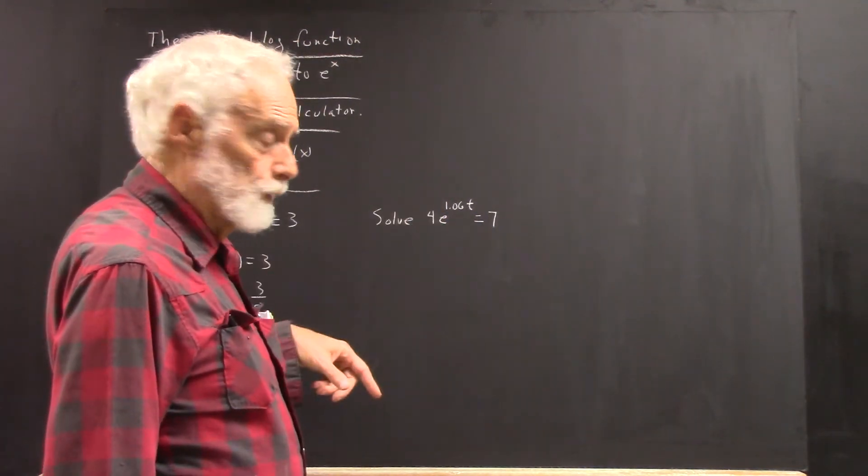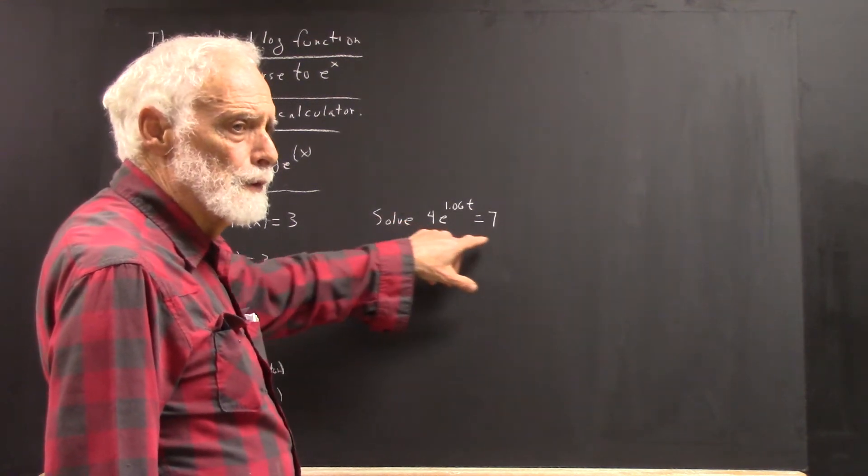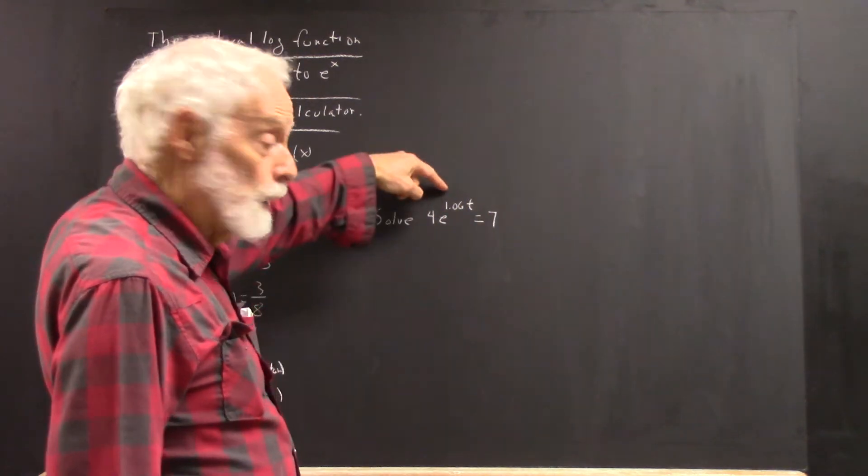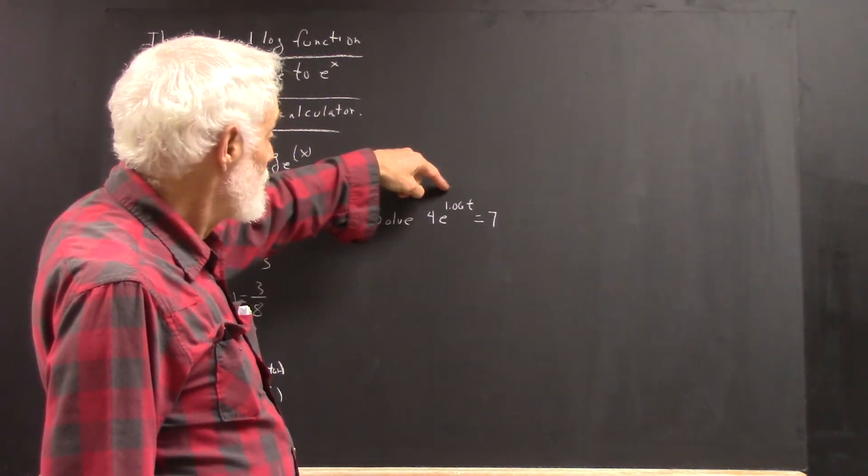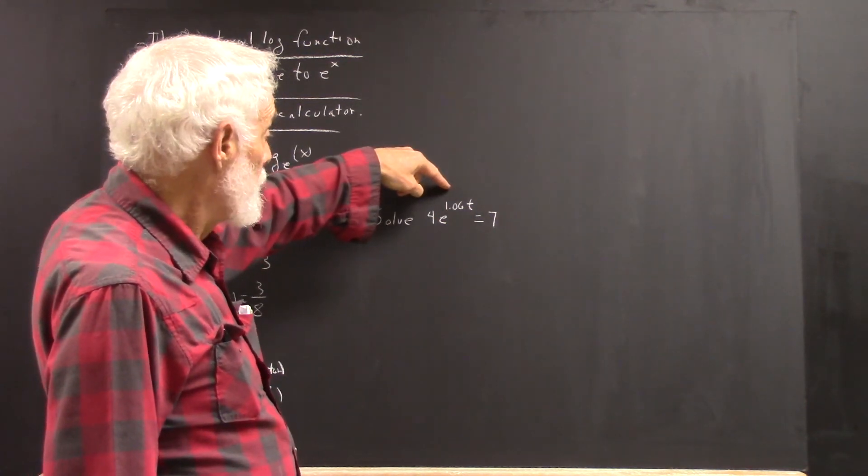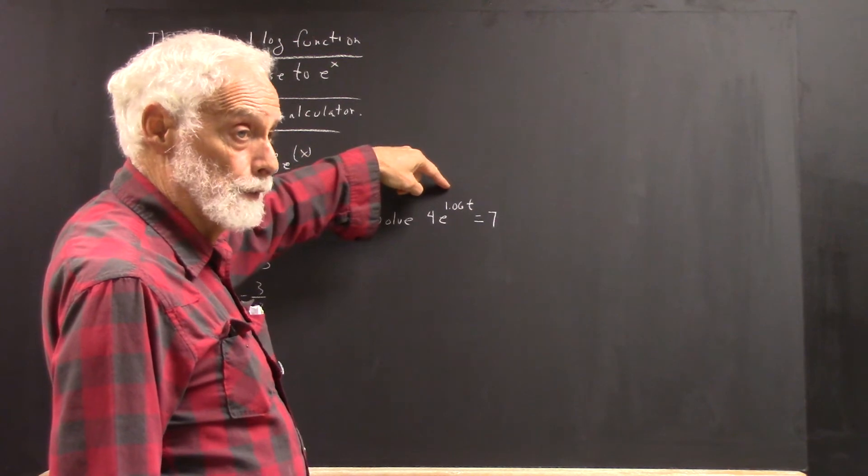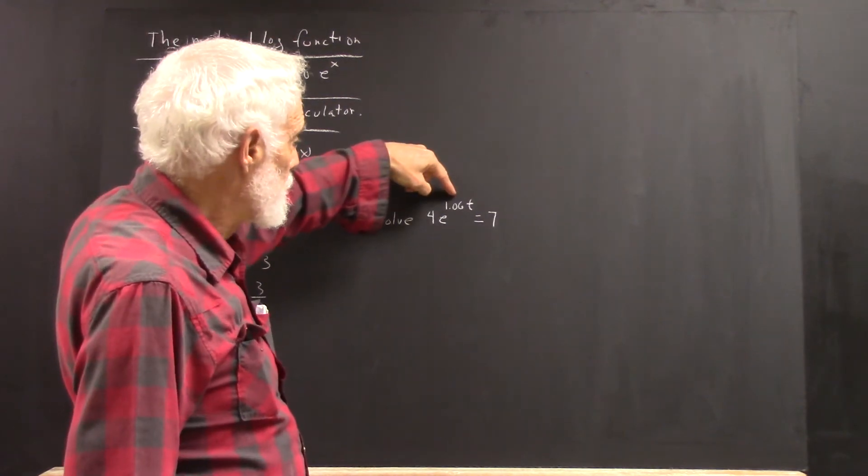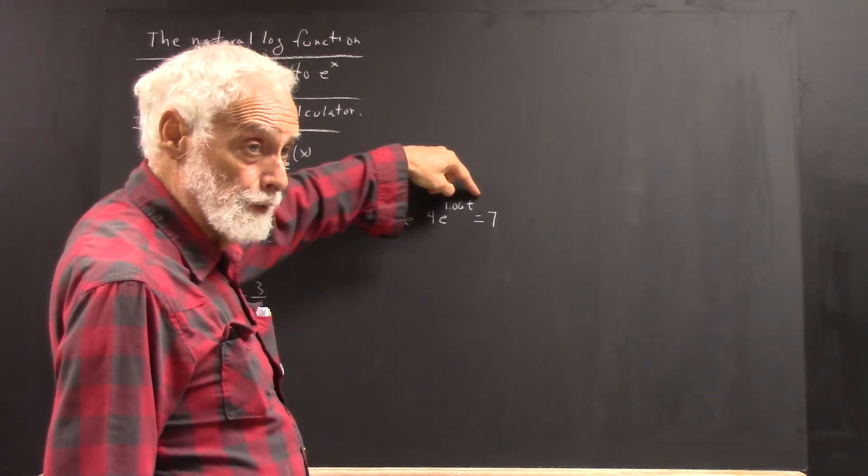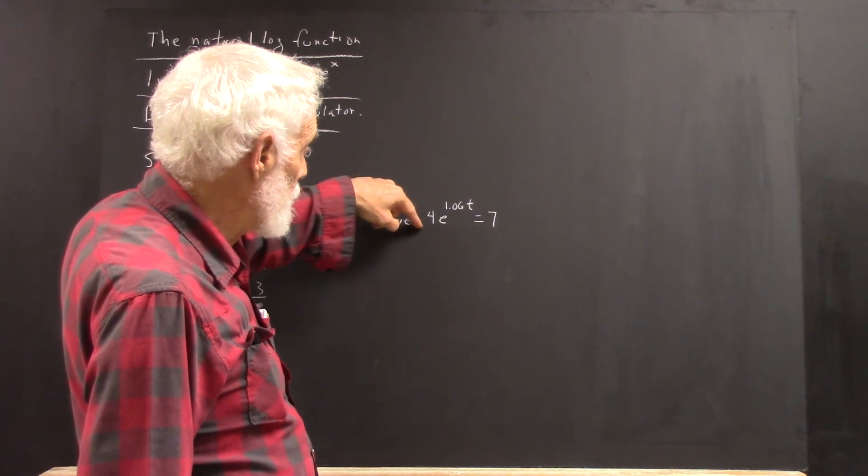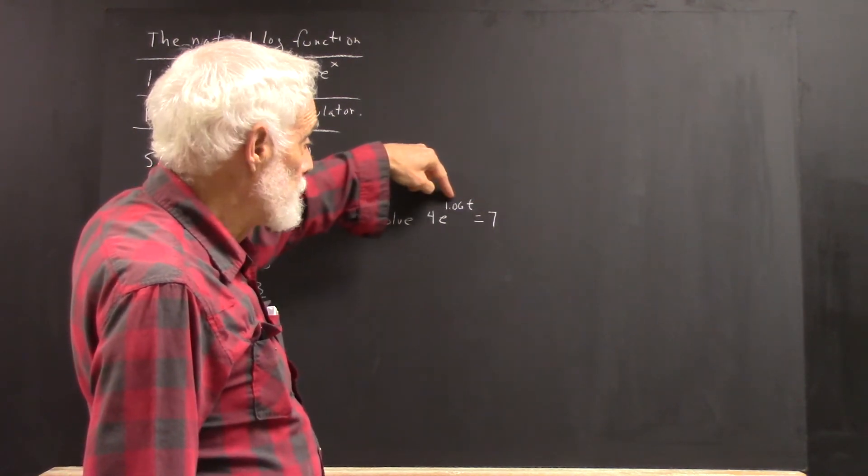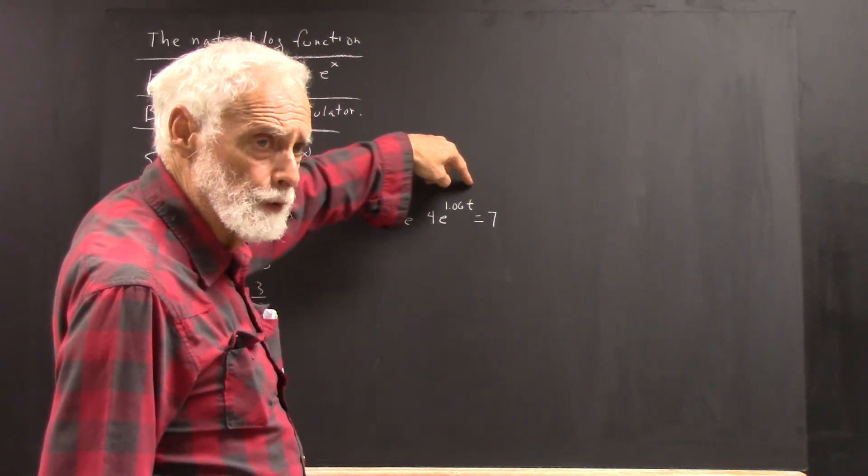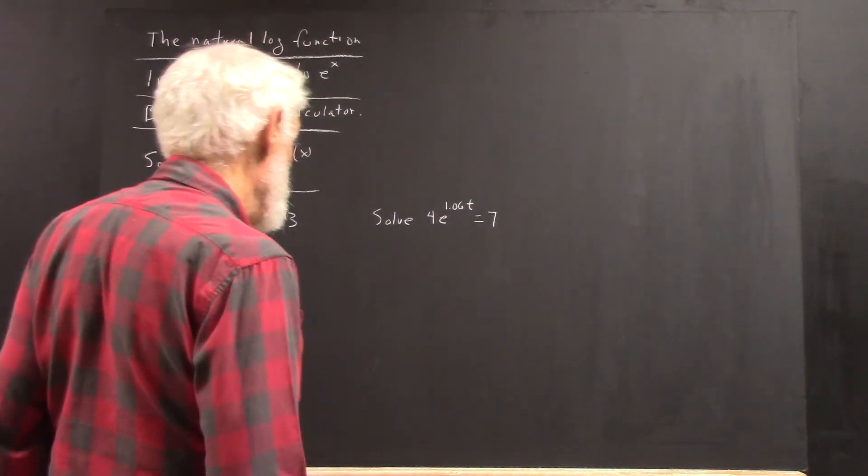For e to the 1.06t, if these numbers, the numbers 4 and 7 represent thousands of dollars, e to the 1.06t is the factor you would use to do compound interest compounded continuously. That's 6% interest compounded continuously. So it's like saying $4,000 for t years at 6% compounded continuously equals $7,000. Solve it for t. So we want to solve this equation in any case for t.